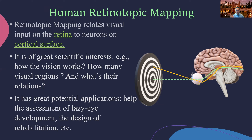Many questions can be asked in this line of research: how visual regions work, how many visual regions exist in the human vision area system, and what their relationships are. In terms of clinical impact, this understanding could help us understand brain development and brain plasticity — for example, for blind people, whose visual cortical area could be repurposed for other functions.